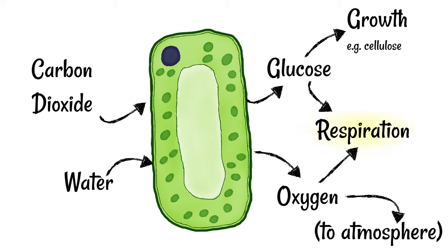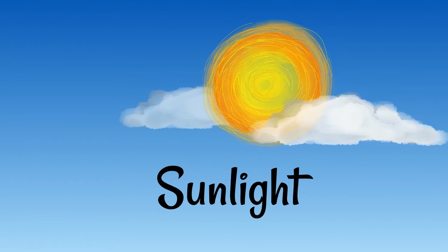Now this process of respiration is there to release energy, and so you might get the impression that plants create energy. This is not true. They require sunlight for this process. Sunlight is the energy source that's used and it basically just converts it from light energy into chemical energy.